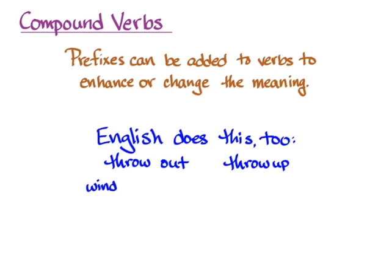Same with 'wind,' where we can say 'wind up.' English also does what Greek does, which is actually to combine the two pieces into one word. So we can have 'put,' but we can also make that 'input.' We can have 'mine,' and then it means something different when you combine it with the preposition 'under.' So 'undermine' is a compound English verb that takes a different meaning from the main verb.